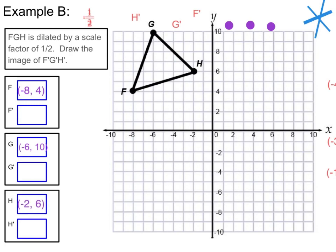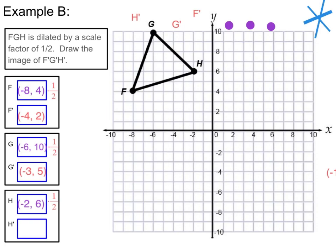Now I'm going to multiply each point by the scale factor of 1 half. We don't need to panic about fractions — fractions can be our friends. If you don't know how to multiply by a half, you can use your calculator and divide the numerator by the denominator to get a decimal. Negative 8 and 4 times a half gives me negative 4, 2. Negative 6 and 10 times a half gives negative 3 and positive 5. Negative 2 and positive 6 times a half gives me negative 1, 3.